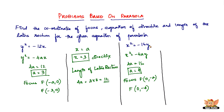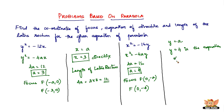Now that we found the coordinates of focus, let us find the equation of the directrix. The equation of the directrix for a parabola of the form x² = -4ay is given by y = a. So it should be y = 4. Therefore y = 4 is the equation of the directrix of the given equation.